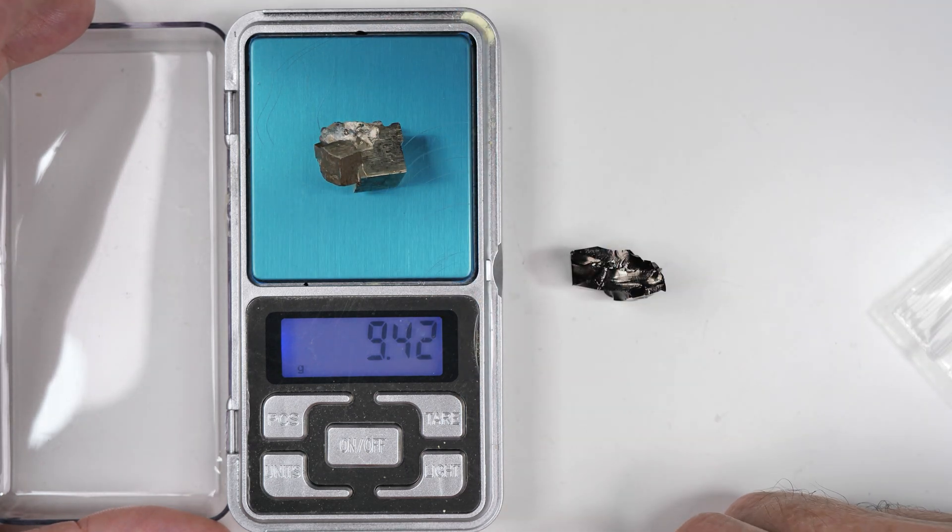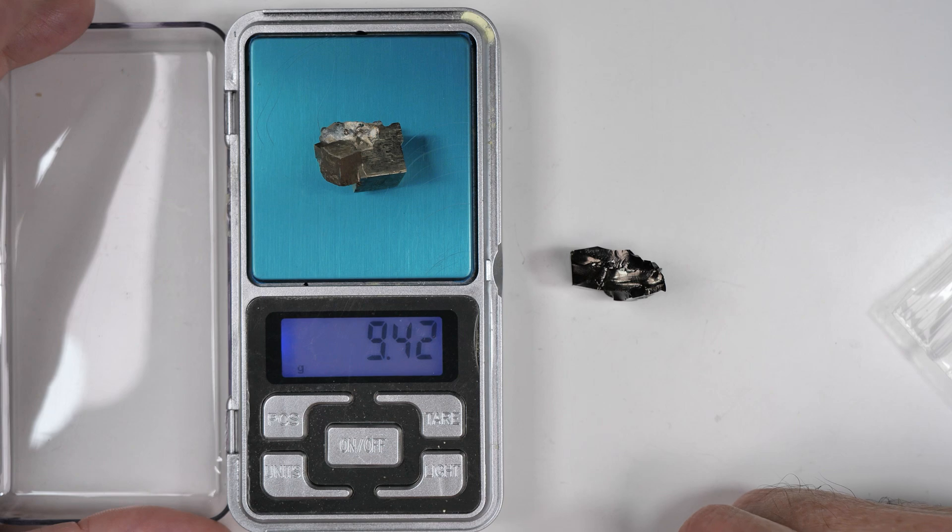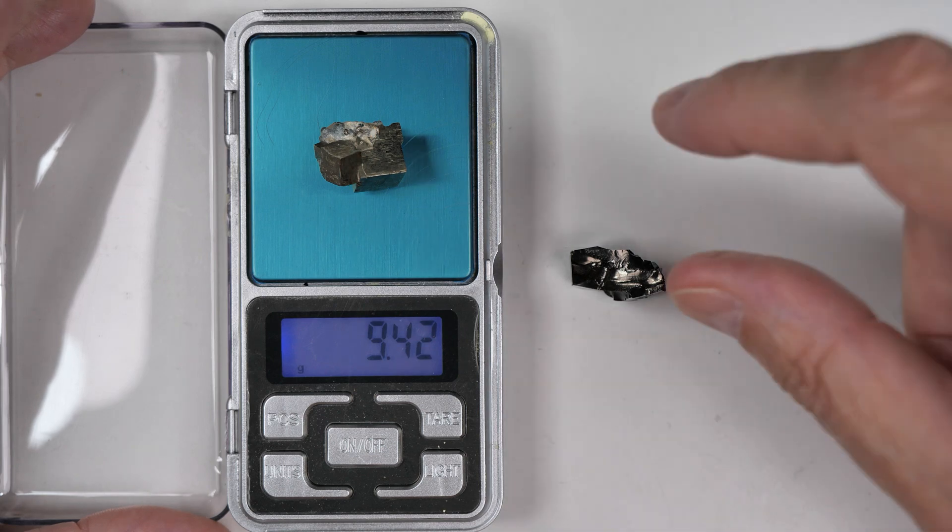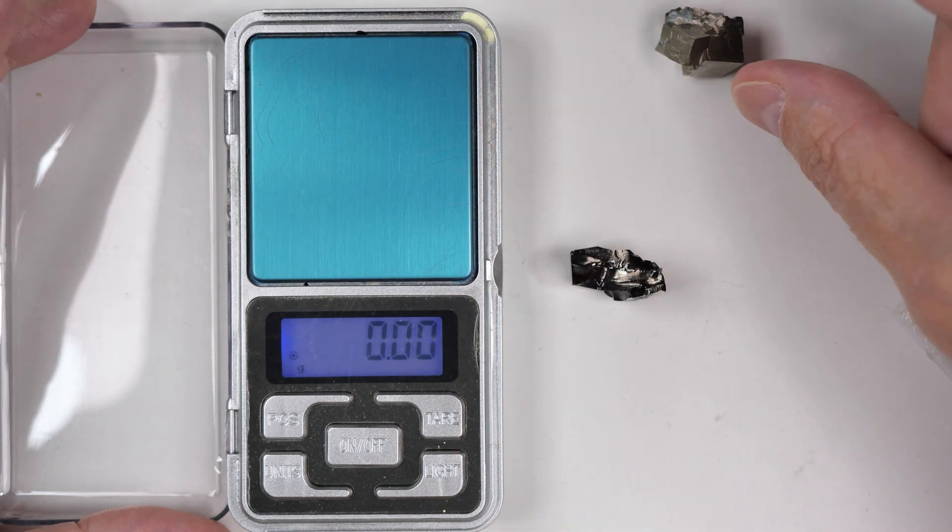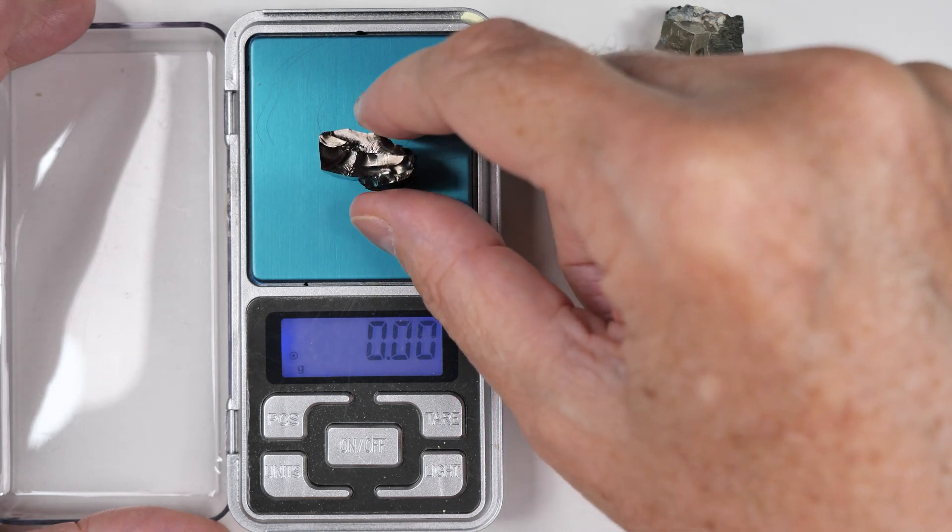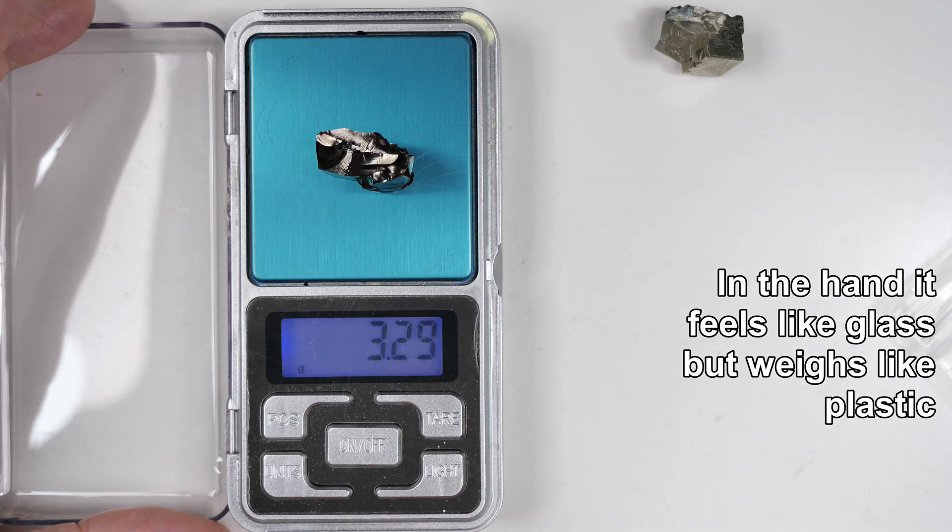Set the piece of iron pyrite on there, and we get 9.42 grams. That's the grams. And then we put the shungite on here. And look at that. Three, three and a third grams.